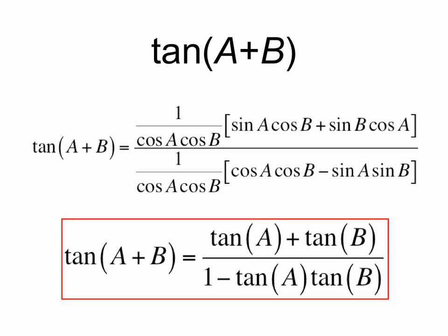So we're left with our final result, which we've proven, that the tan of a plus b equals the tan of a plus the tan of b, all over 1 minus the tan of a times the tan of b.